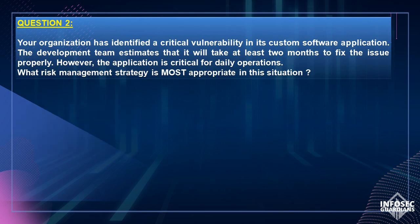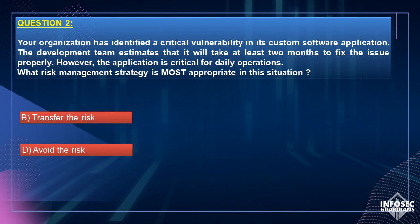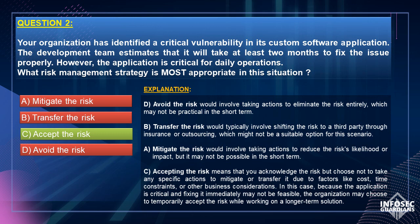Let us review each option one by one. Option D, Avoid the risk, would involve taking actions to eliminate the risk entirely, which may not be practical in the short term. Option B, Transfer the risk, would typically involve shifting the risk to a third party through insurance or outsourcing, which might not be suitable for this scenario. Option A, Mitigate the risk, would involve taking actions to reduce the risk's likelihood or impact, but it may not be possible in the short term. Option C, Accepting the risk, means you acknowledge the risk but choose not to take any specific actions to mitigate or transfer it due to factors like cost, time constraints, or other business considerations. In this case, because the application is critical and fixing it immediately may not be feasible, the organization may choose to temporarily accept the risk while working on a longer-term solution. Hence, Option C, Accept the risk, is the correct answer.